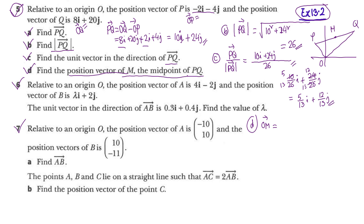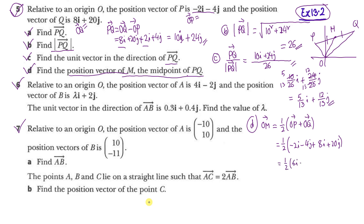The shortcut formula for midpoint M of PQ is: OM = half of (OP + OQ). Let me put our vectors in: OP is minus 2i minus 4j, and OQ is 8i plus 20j. So this is half of (6i plus 16j), which gives us 3i plus 8j.